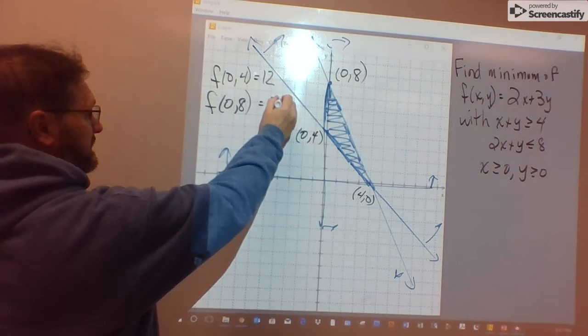(0, 8), this point here, plugged into 2x plus 3y gives us 24.